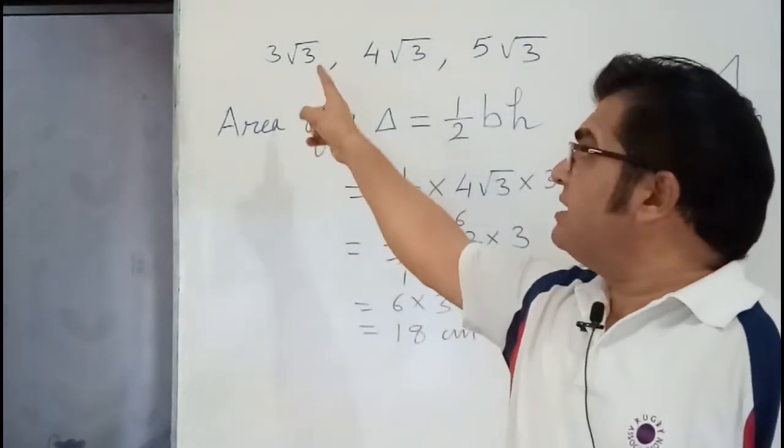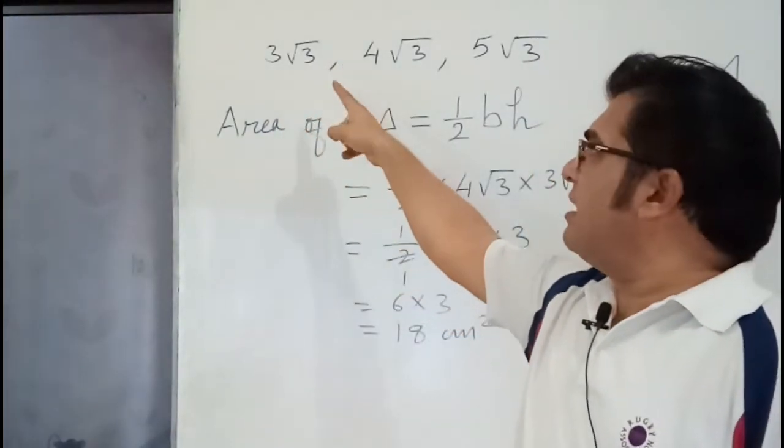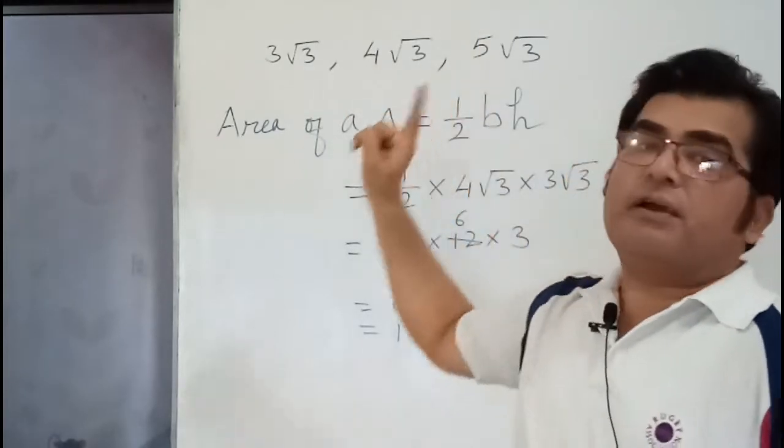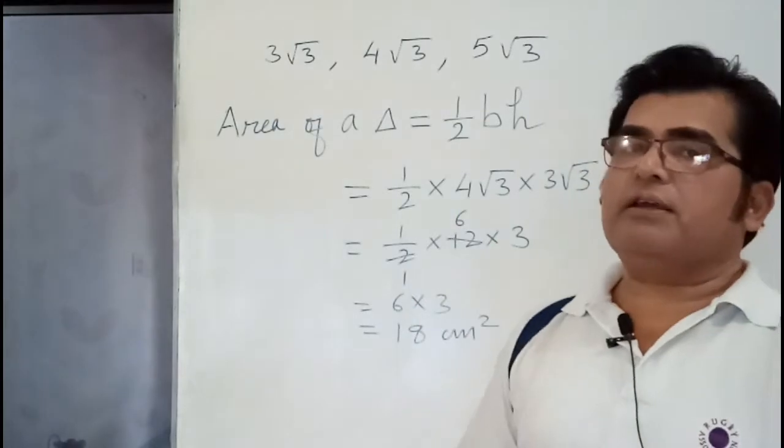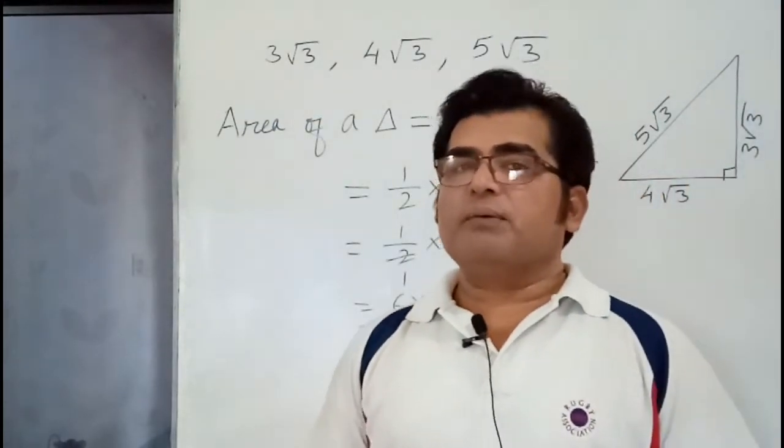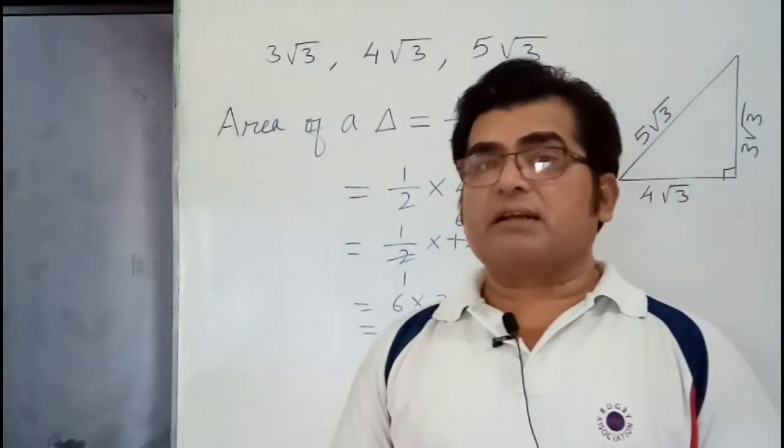The sides of a right angle triangle are 3√3, 4√3, and 5√3 centimeters. So we have to find the area of the triangle. But one positive thing is that it is a right angle triangle.